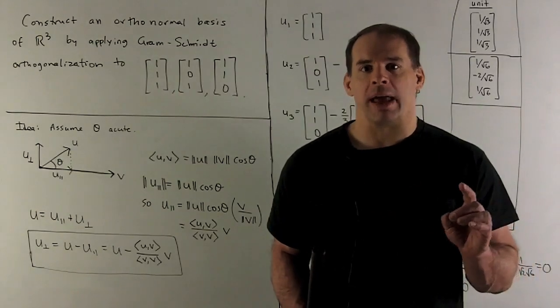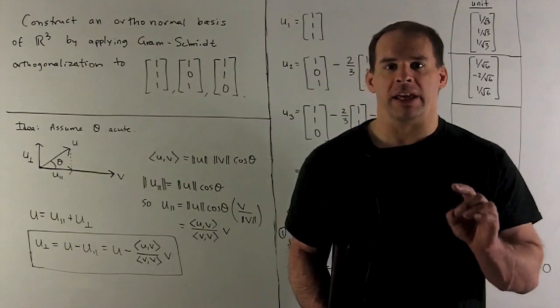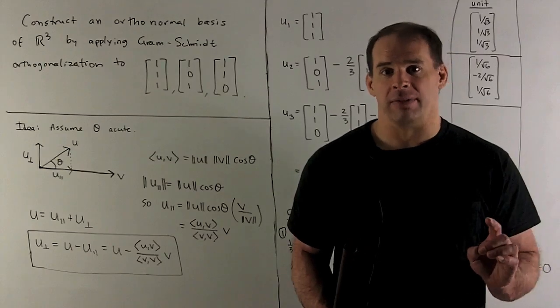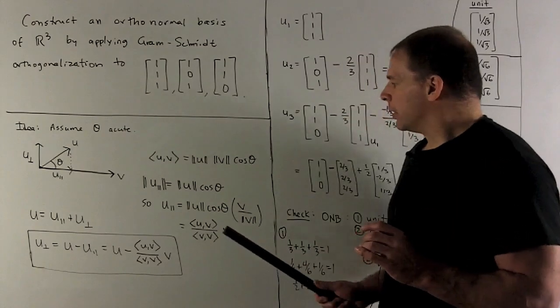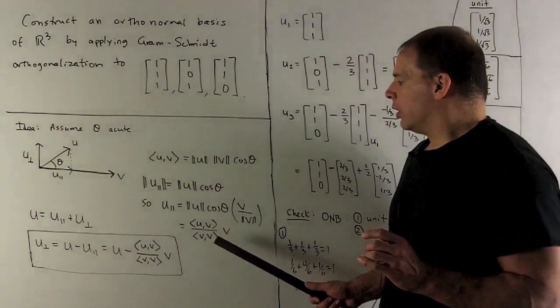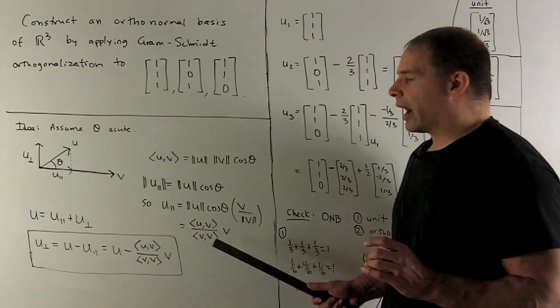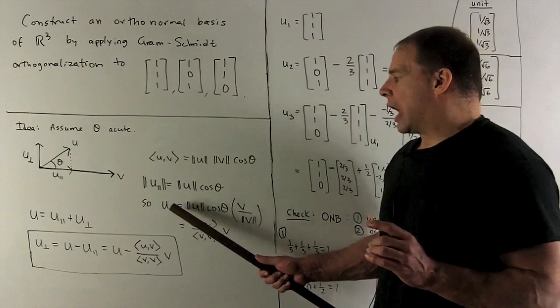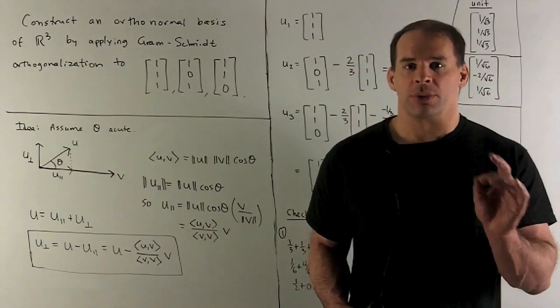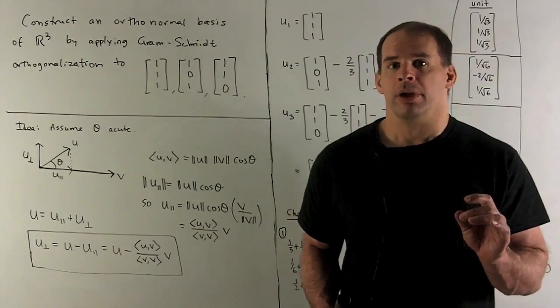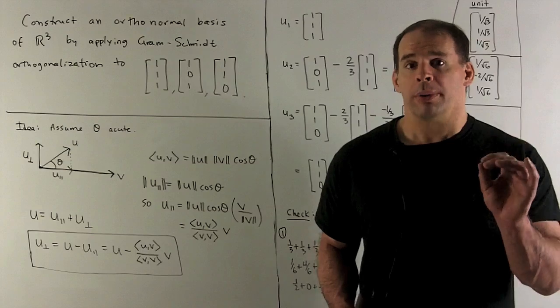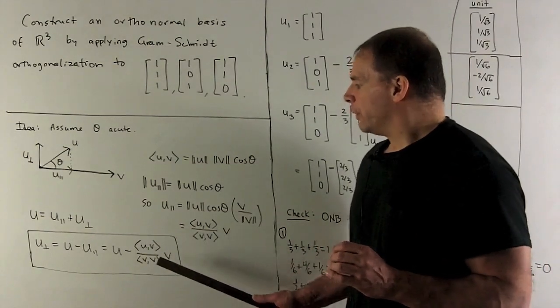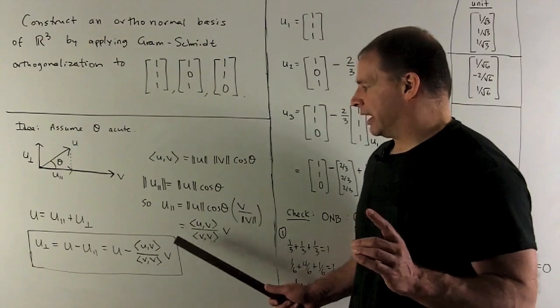When I put that together, we have inner product of u and v over the length of v times v divided by the length of v, which gives me u inner product with v over the length of v squared or v inner product with itself times v. That's u_parallel. To get u_perp, we subtract that off of u. So our formula for the perp is going to be u minus inner product of u, v over inner product v with v times v.